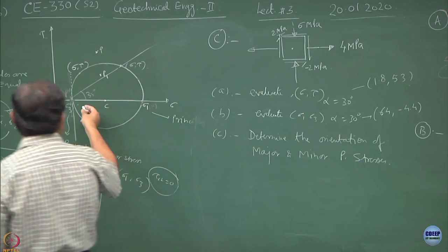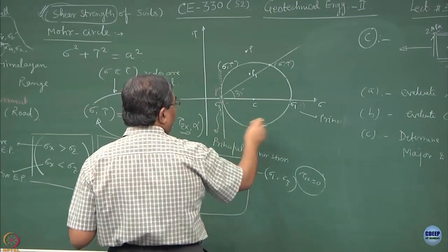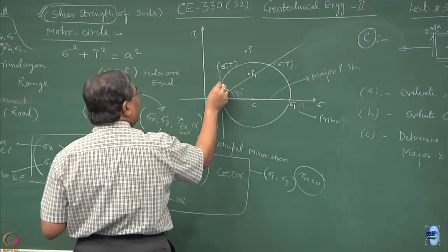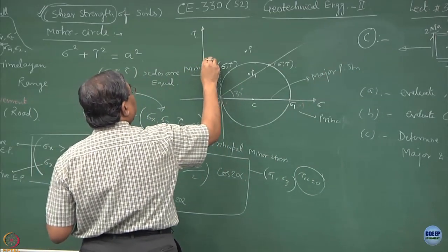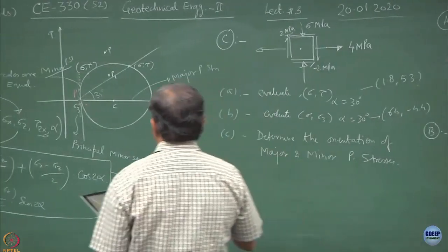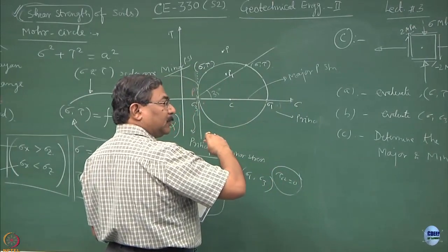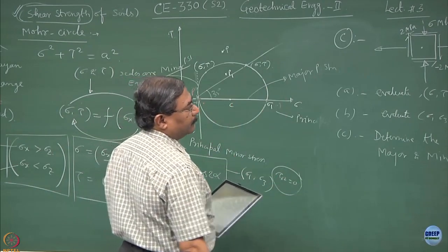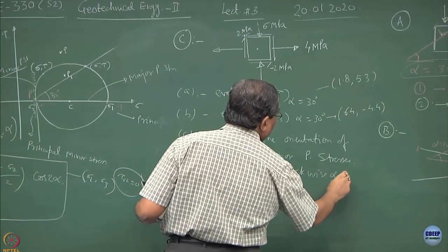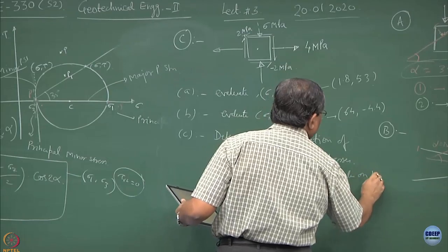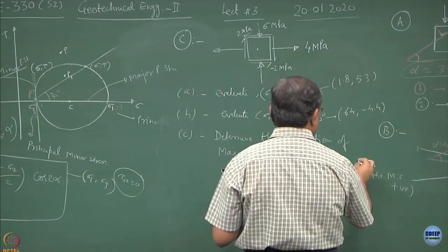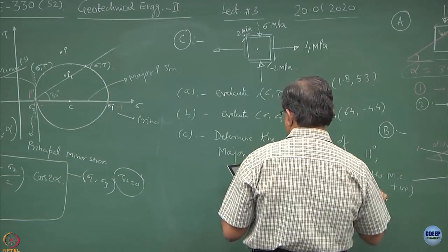In this case, the orientation of major and minor principal stresses was 0 because this happens to be the major principal stress and this happens to be the minor principal stress. The sign convention is angles are always assumed to be positive when they are clockwise. In this case, clockwise angles on the Mohr circle are positive. So you will be getting this as 11 degree and 101.